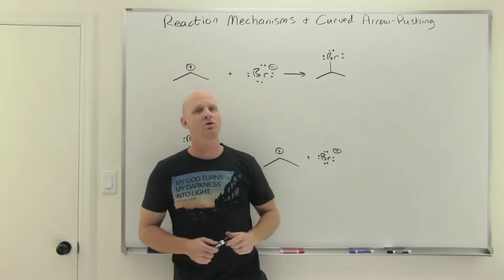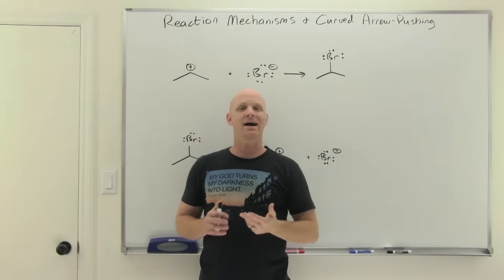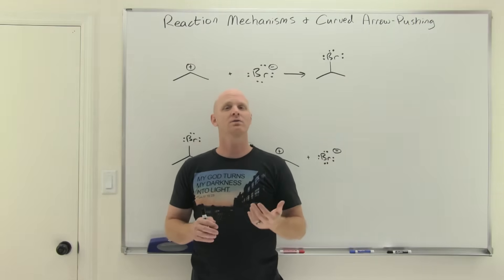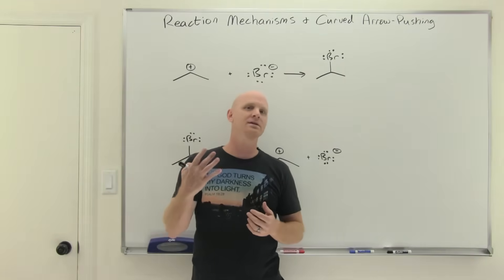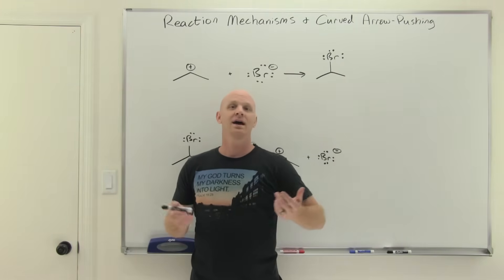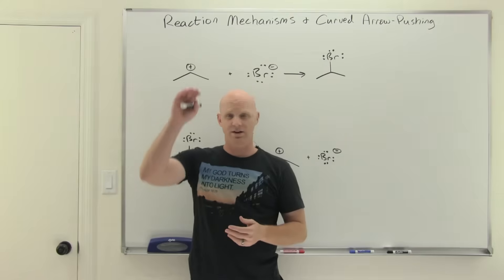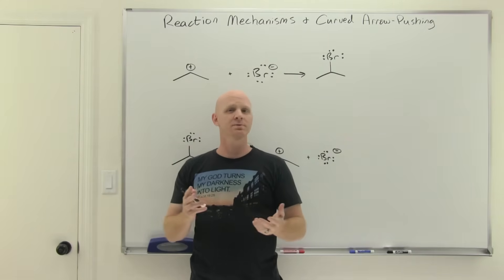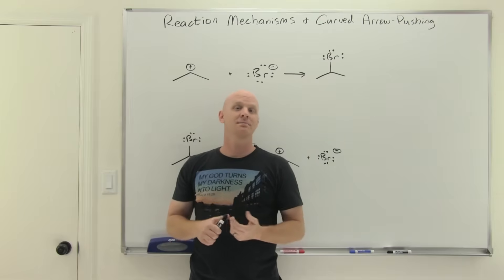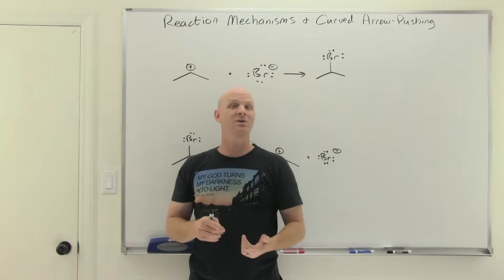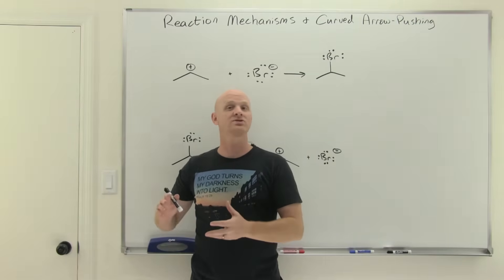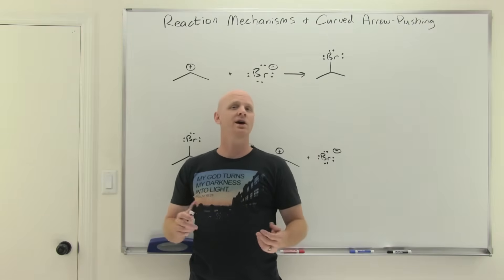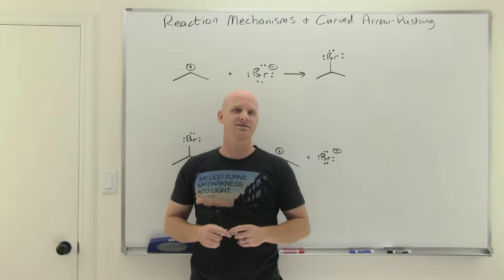Reaction mechanisms and curved arrow pushing is going to be the topic in this last lesson on a chapter of organic reactions and mechanisms. We're going to go through and identify the four most common mechanistic steps and the associated curved arrow pushing, and work through several examples showing that arrow pushing, which shows the movement of electrons involved in each — things you'll definitely need to understand before we start using them in the mechanisms of well over a hundred reactions by the time you finish second semester.